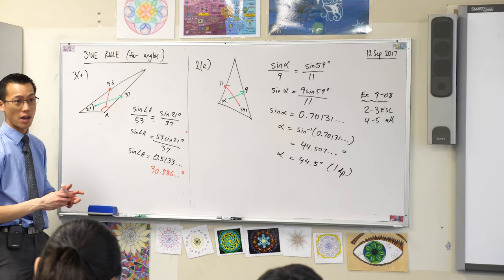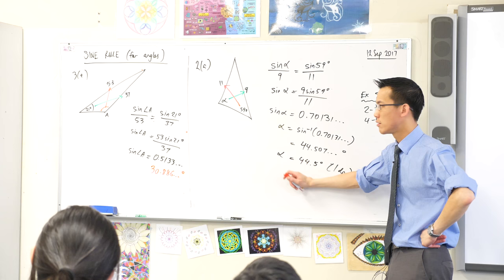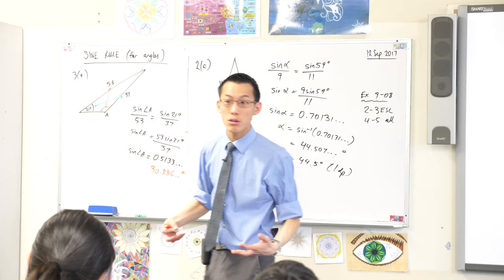When we ended this question and got 44.5, I asked you to do a sense check, yeah? Do a sense check on this answer for me. Have a look. Check out the diagram. 30.886? 31 degrees? What's going wrong? Well, how do I know something is wrong?